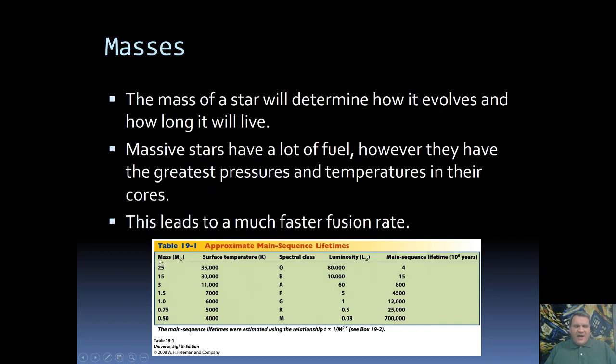Starting up here at a 25 solar mass star, so this has a surface temperature of 35,000 Kelvin and a spectral type O. So what color is this star going to be? I hope you're thinking blue. O stars are always blue. This will have a main sequence life of 4 million years.